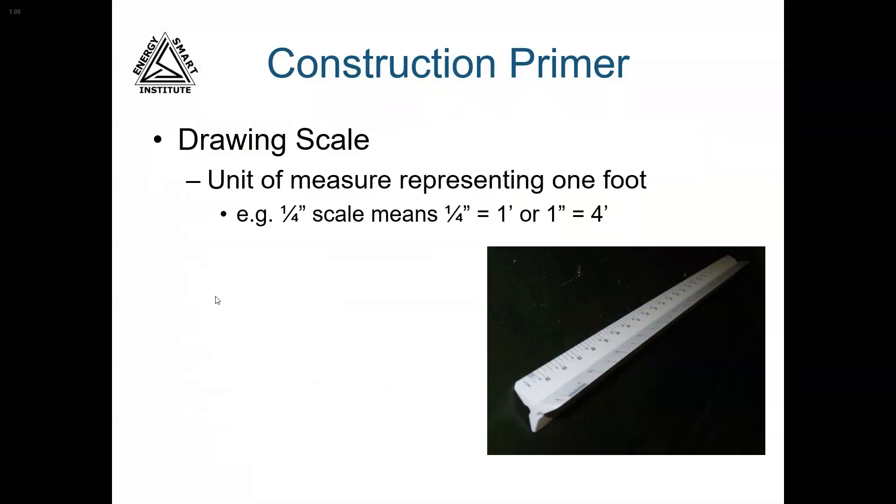Every plan is drawn to a specific scale. A quarter-inch or eighth-inch scale is very common. A quarter-inch scale means that every quarter-inch measurement on the plans will be equivalent to one foot when the home is actually built. So a one-inch wall on the plan will be four feet long when the house is built.